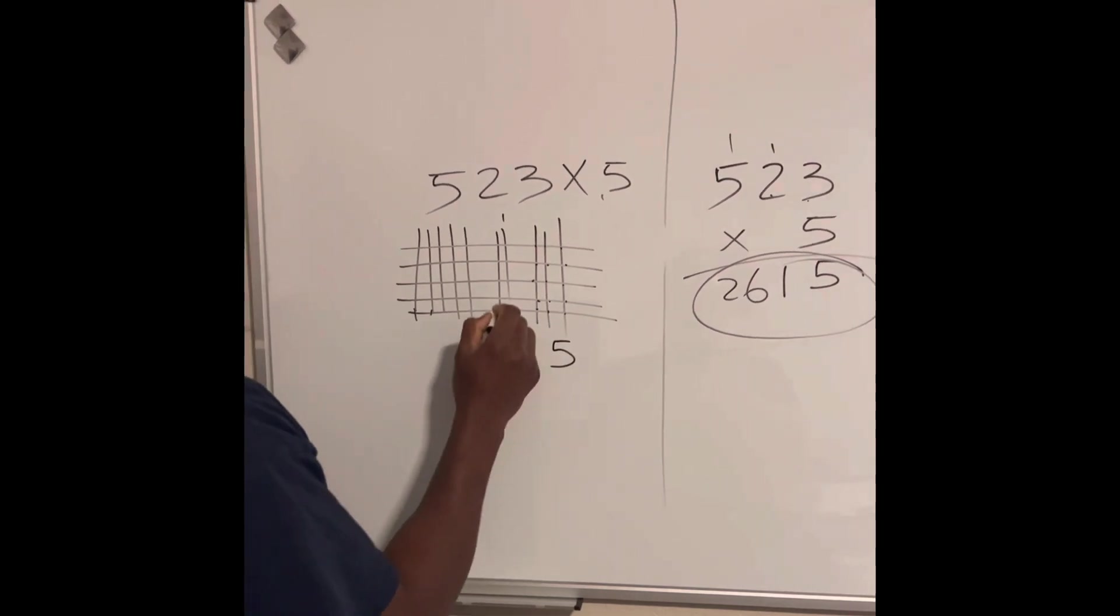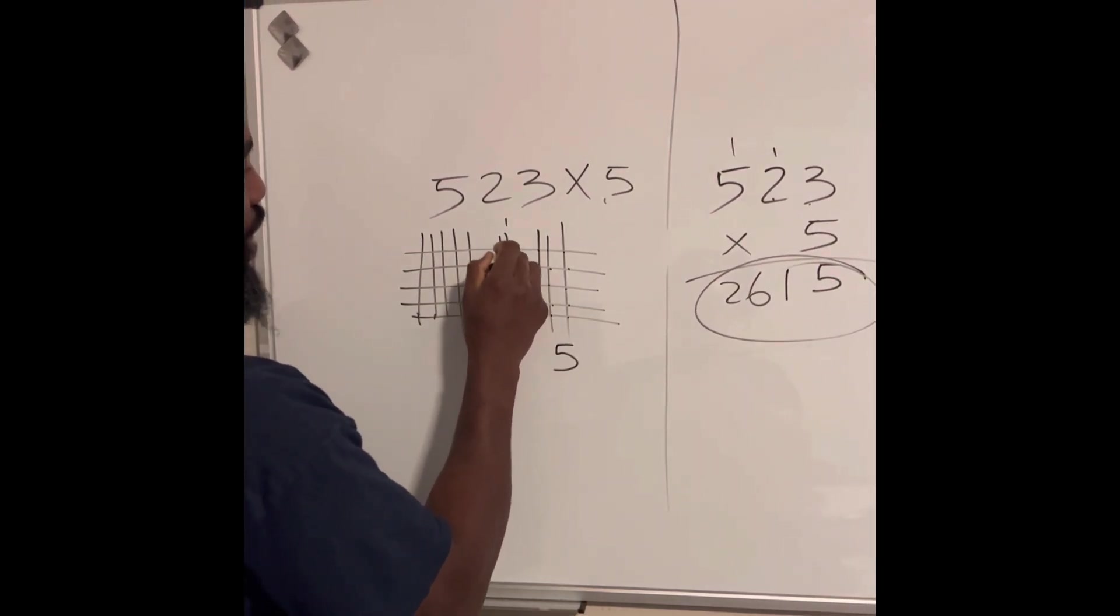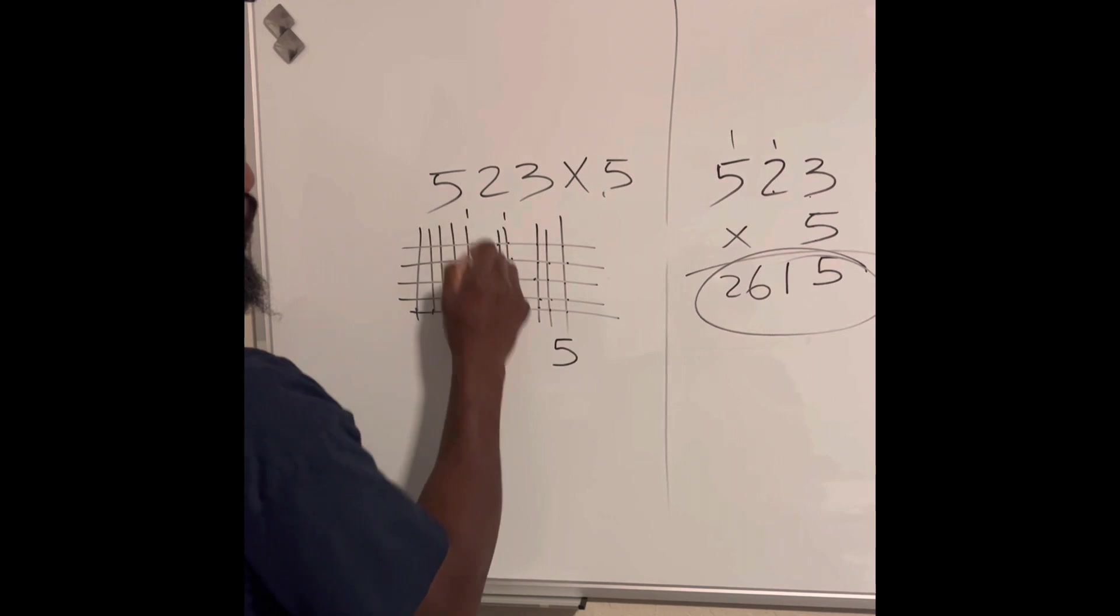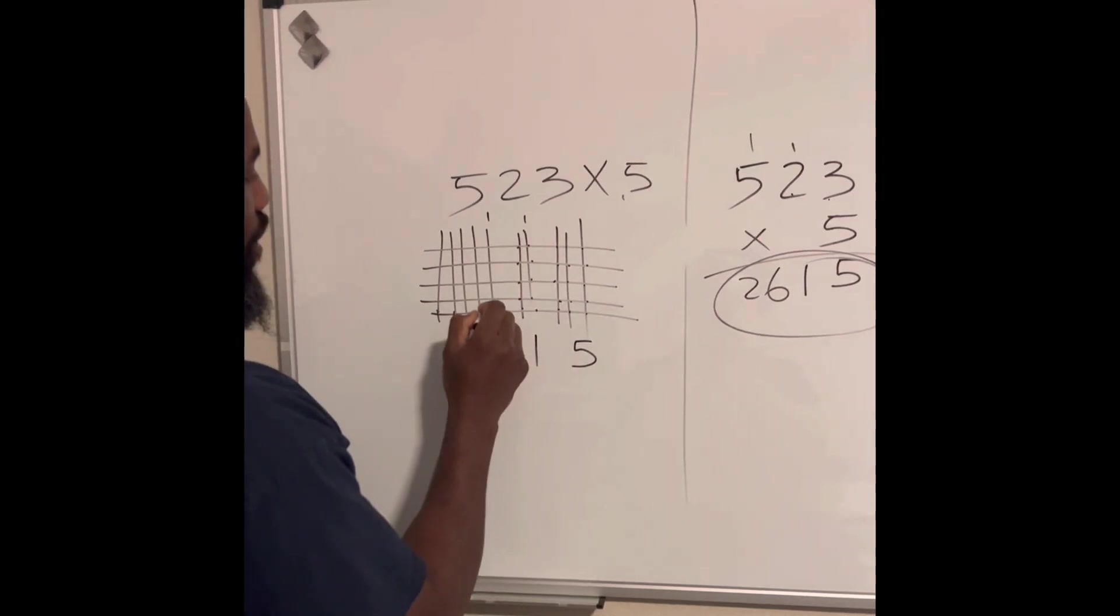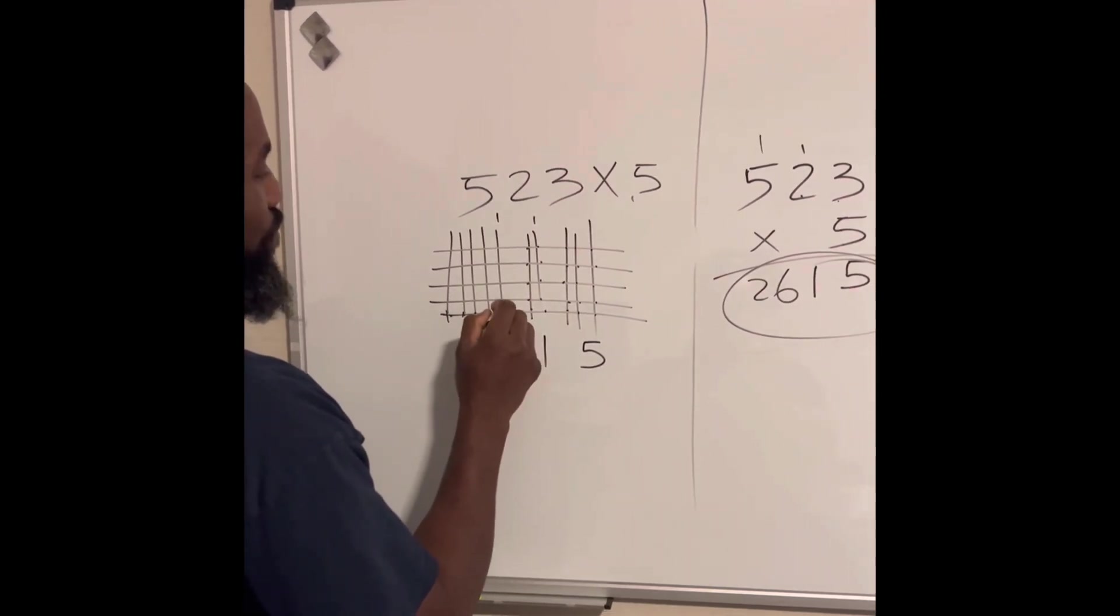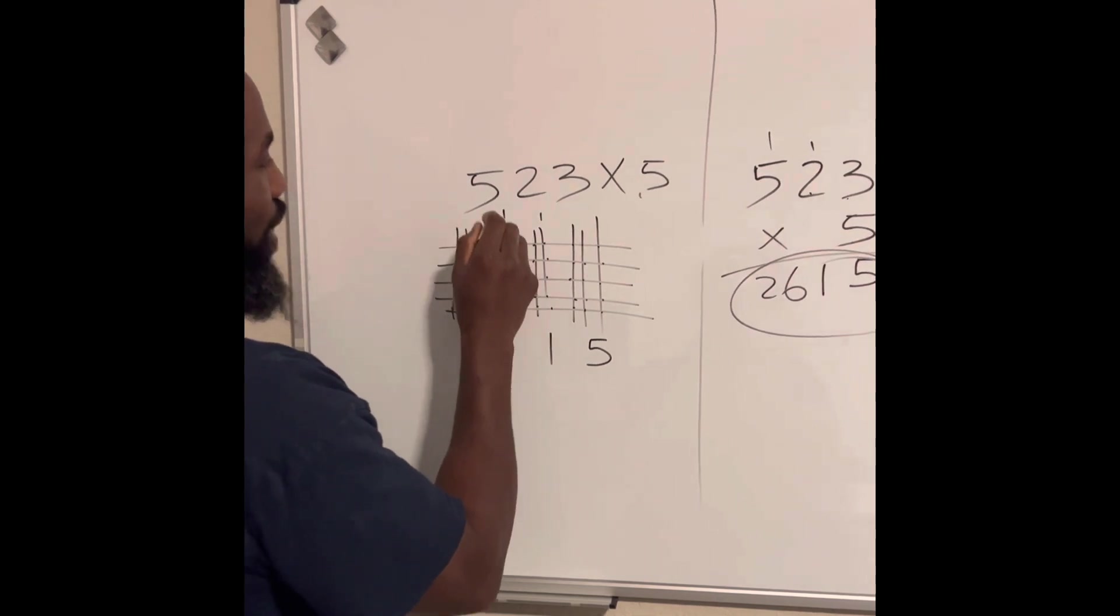One, five. One, two, three, four, five, six, seven, eight, nine, ten, eleven. One, one. One, two, three, four, five. Five, ten, fifteen, twenty, twenty-five, twenty-six.